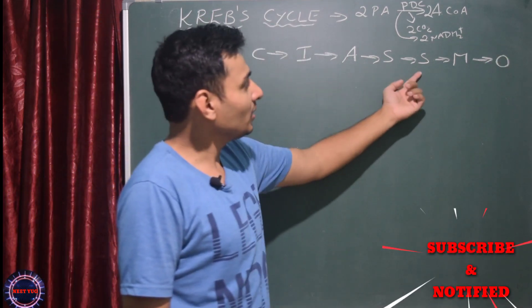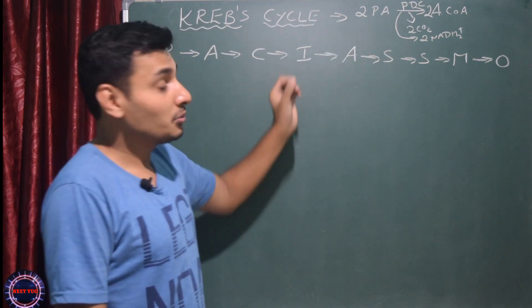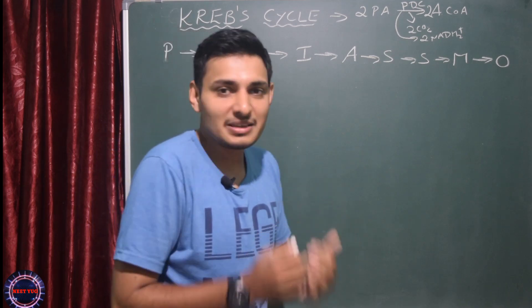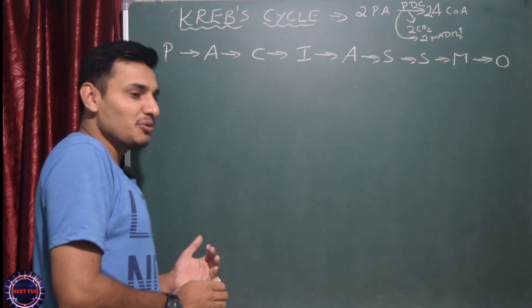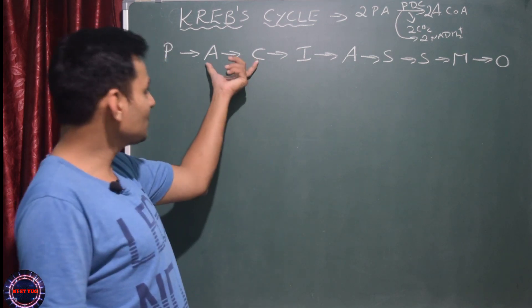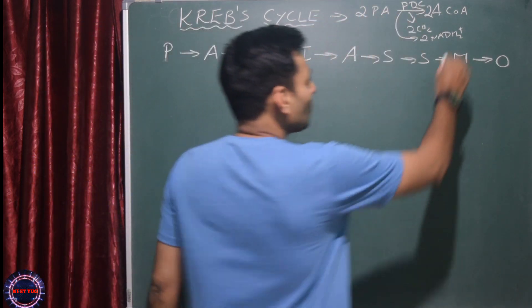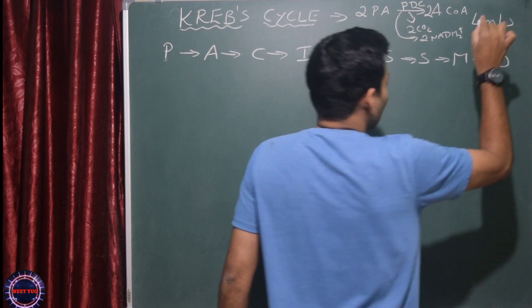Here we get 3 NADH2, plus 2 GTP also, and 2 FADH2 as well. Where does this energy come from? That's the question they actually ask.